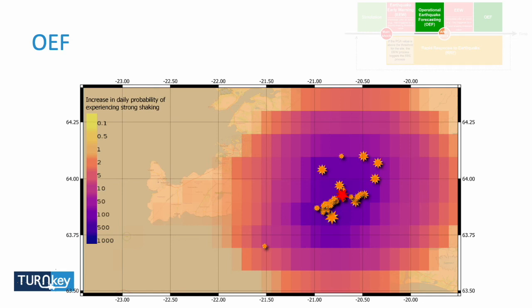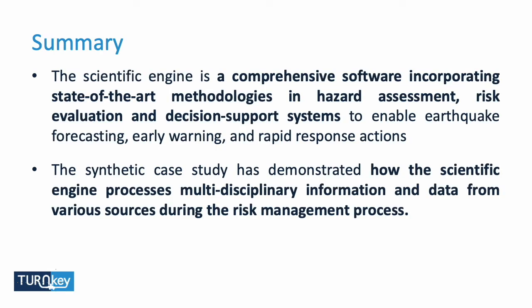Combining the aftershock information with the static hazard map, we start generating the daily probability of experiencing strong shaking. Previously, based on static data, this probability was low. But when aftershocks are combined with the static data, we start to see it increasing. As we get closer to the mainshock location, the probability increases significantly — this is important information for decision makers.